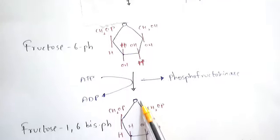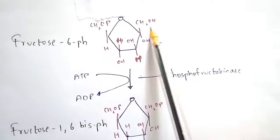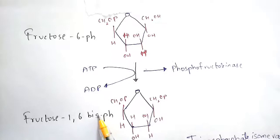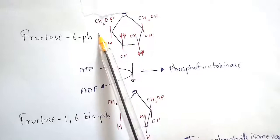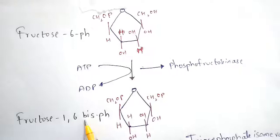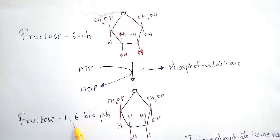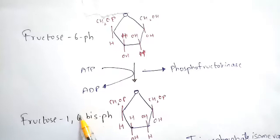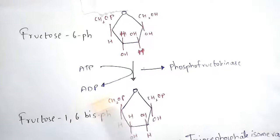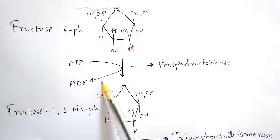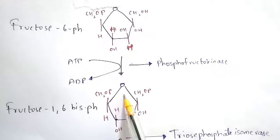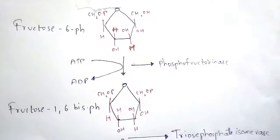Fructose-6-phosphate will get converted to fructose-1,6-bisphosphate. By the name itself, you can understand that the first carbon and the sixth carbon undergo transformations — that is, a phosphate group is added at the first carbon as well. The prefix 'bis' indicates two phosphate groups. During this step, ATP is utilized and ADP is produced, by the enzyme phosphofructokinase.